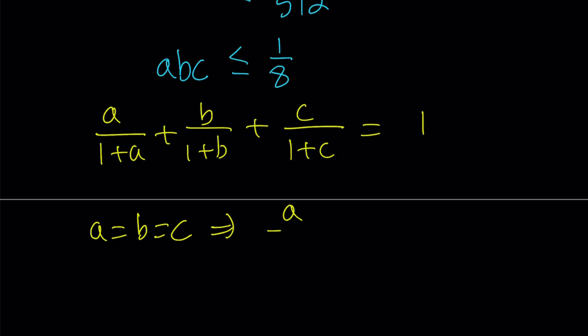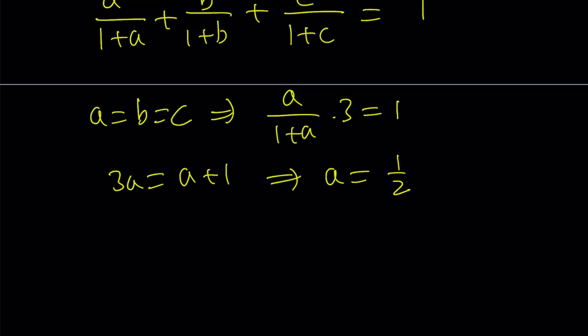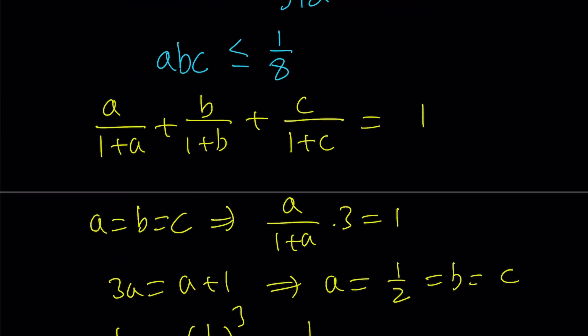So if you set a, b, c equal, so if a equals b equals c, then from here, you're going to get the following. We're going to have a over 1 plus a three times. That equals 1. This gives us 3a equals a plus 1, which means 2a equals 1 and a equals 1/2. And for the value of a equals 1/2, of course, b is going to be that and c is going to be that. abc is just going to equal 1/2 to the third power, which is 1/8. So it's possible for abc to attain the value of 1/8 when they are all equal. All right?